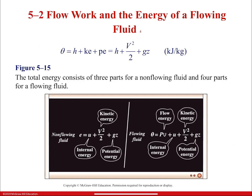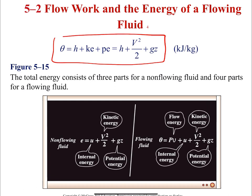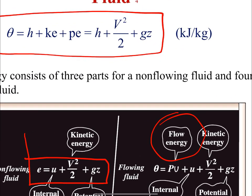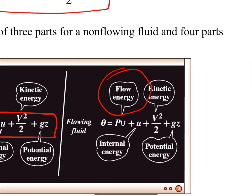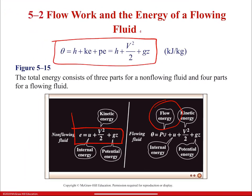This final equation — θ = H + V²/2 + gz — is the equation we'll use for all the engineering devices we're about to study. To summarize: a non-flowing fluid has three energy parts (internal, kinetic, potential), while a flowing fluid has four parts — those three plus flow energy. Remember this because it's quite important.